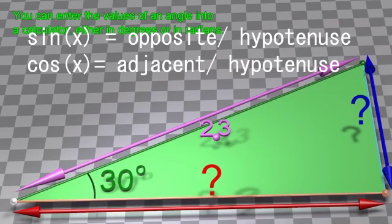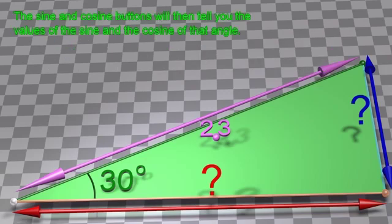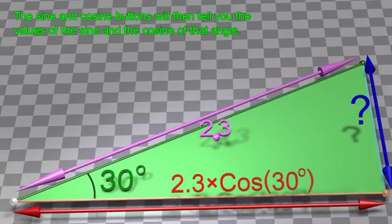Sine theta equals the opposite over hypotenuse, and cosine theta equals adjacent over hypotenuse. This would be very useful to find the length of the sides in a triangle if we don't already know them. Or maybe it was just invented for students to suffer.